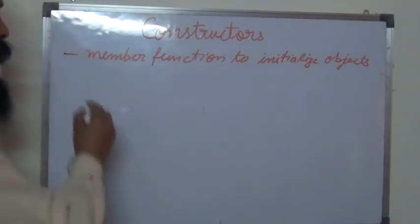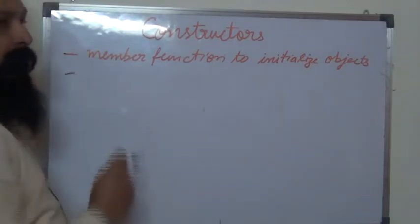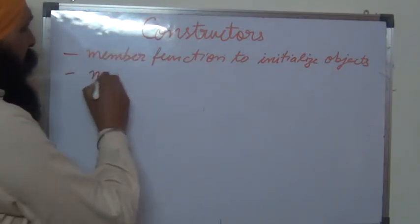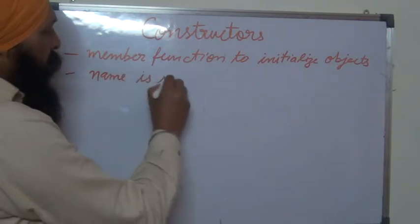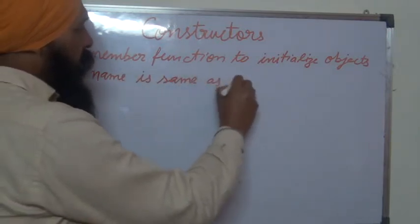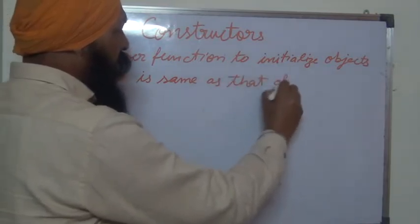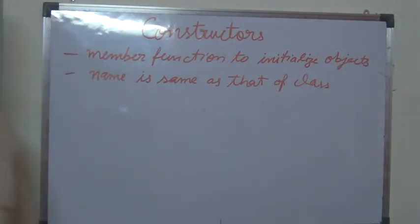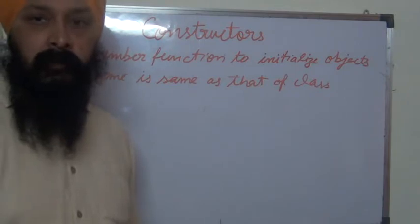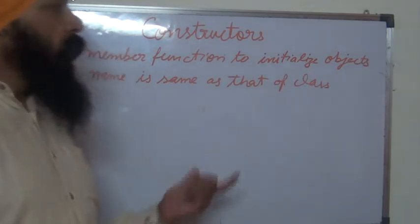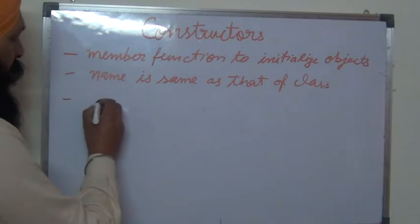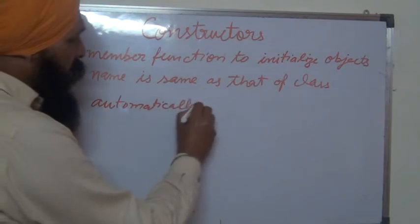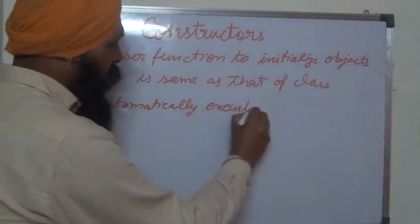The second property of a Constructor is that its name should be the same as that of the class. The third property is that the Constructor is executed automatically — there is no need to explicitly call it.